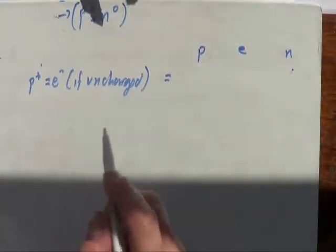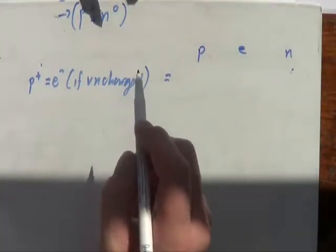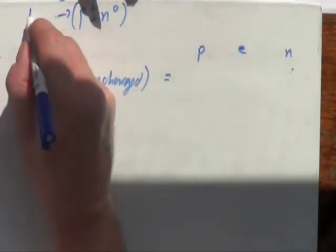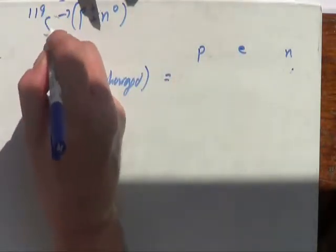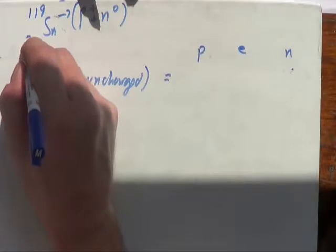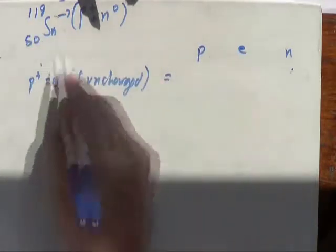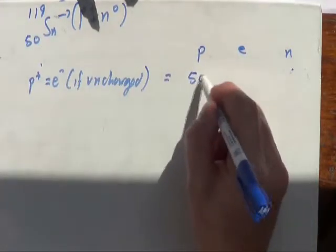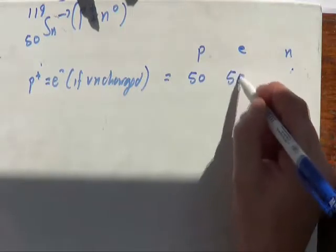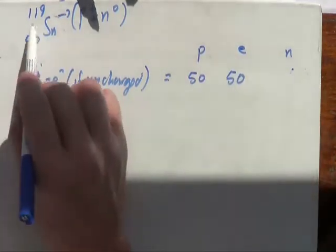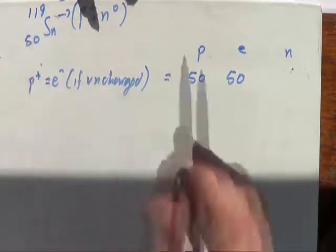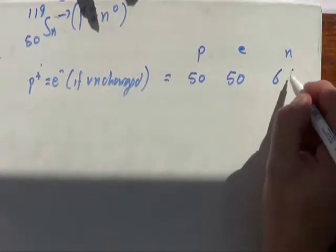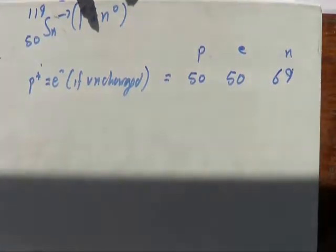Hopefully you're getting these now. This next element has atomic number 50 and mass number 119. So protons are 50, electrons are 50 since there's no charge, and neutrons are 119 minus 50 which gives 69.